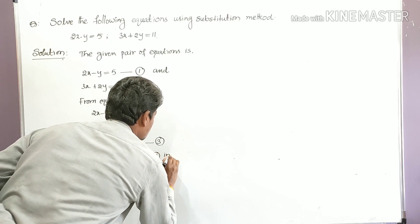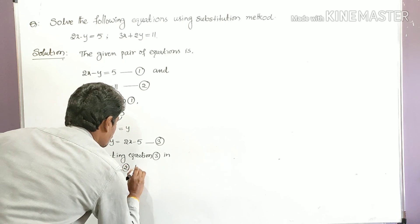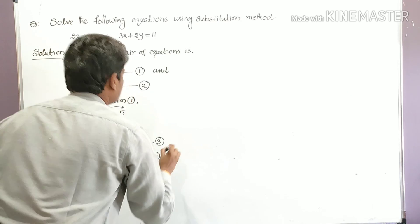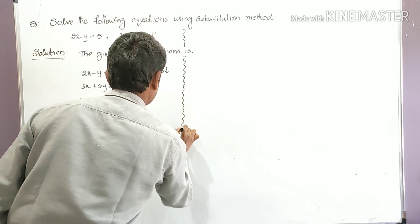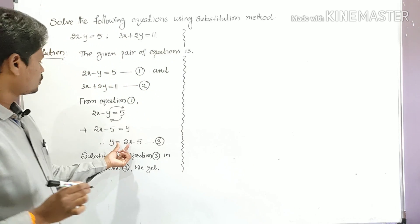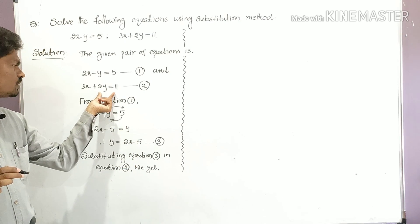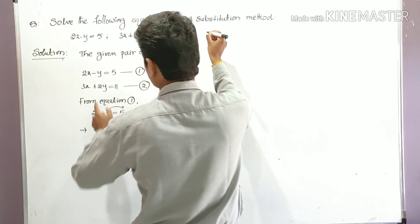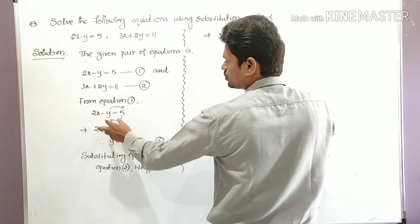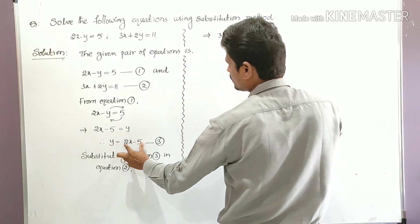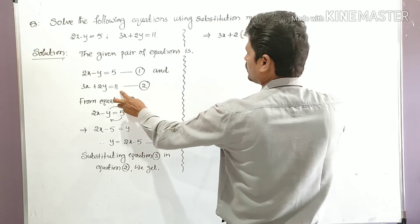Substituting equation three in equation two, we get: what is equation two? Three x plus two y is equal to eleven. Wherever y is there, substitute y equal to 2x minus five. So that gives us 3x plus 2 times (2x minus five) is equal to eleven.